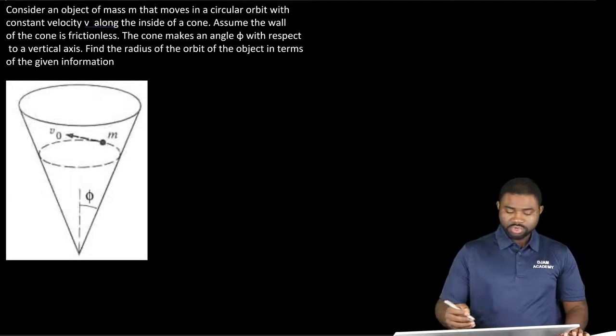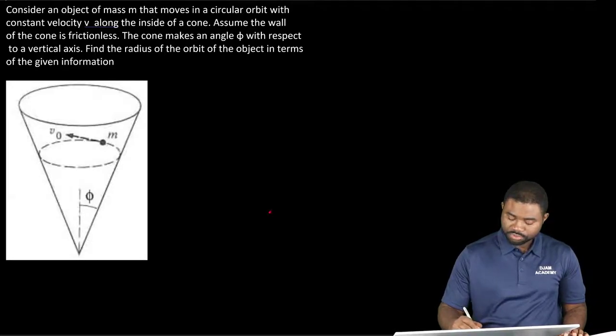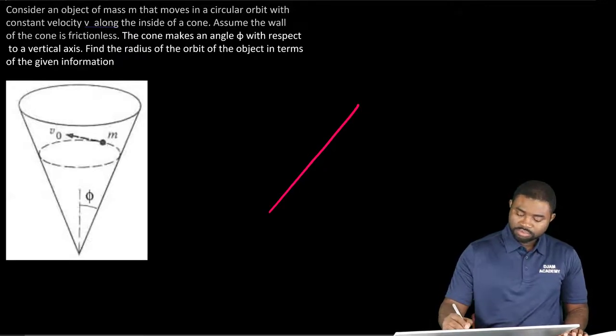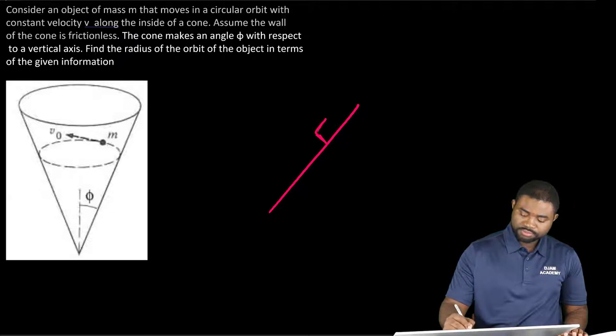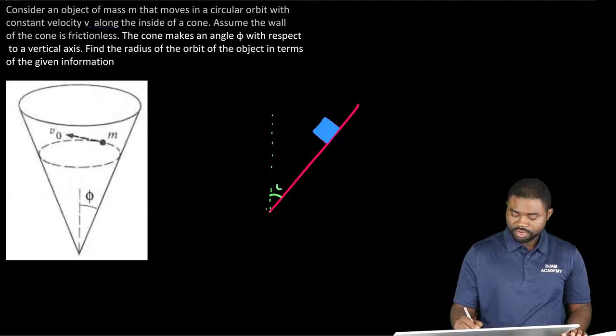So I'm going to redraw the diagram here. We have the inside of a cone looks like that. So this is our object. This angle is phi.